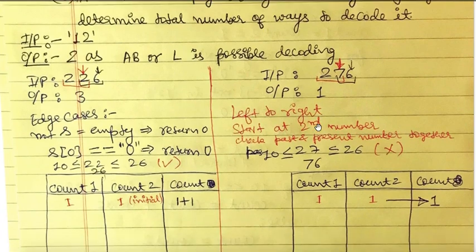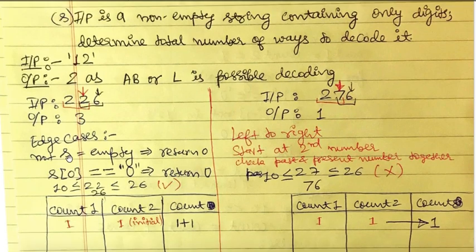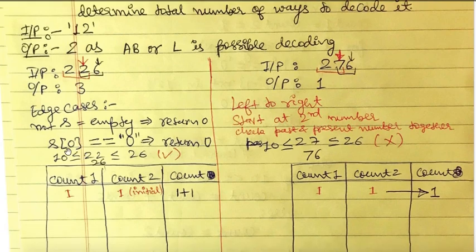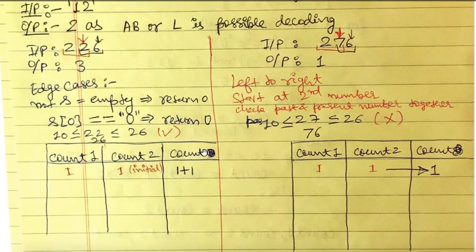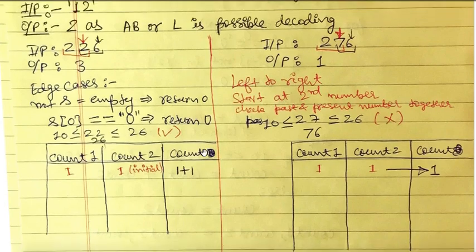The question has tricky edge cases. If the string is empty, we return 0. If the first element in the string is 0, we also return 0 — because we only have encodings from 1 to 26, and we don't know how to decode a leading zero. For all other numbers from 1 to 9, we can decode them.